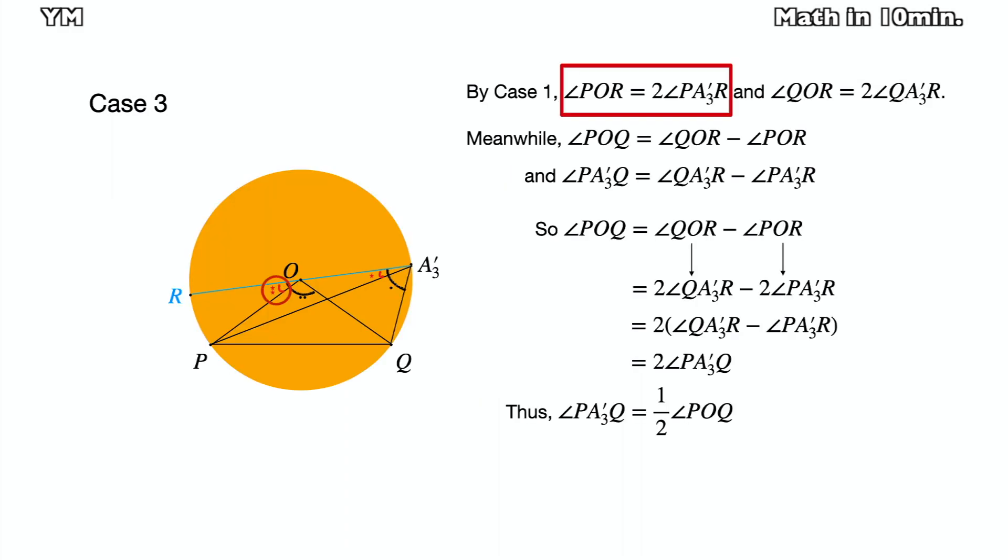angle POR equals twice angle PA3R and angle QOR equals twice angle QA3R. Angle POQ is angle QOR minus angle POR, and it is two times angle QA3R minus two times angle PA3R. Then this finally becomes twice angle PA3Q. So we proved that angle A3 is half of angle POQ.